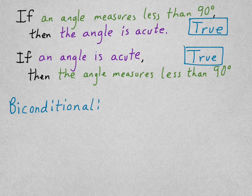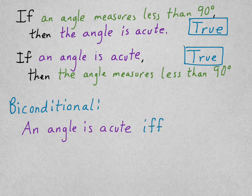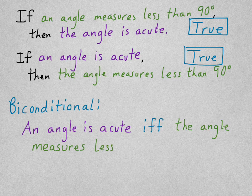So I'm going to take the two parts, the hypothesis and the conclusion, and put the phrase if and only if between them. So, we'll start the sentence. An angle is acute if and only if the angle measures less than 90.